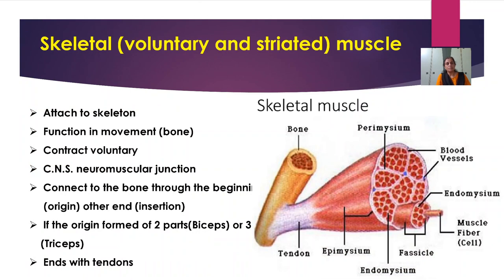Skeletal muscles are voluntary in function and show striations. The diagram shows a bone with the attachment of skeletal muscle with the help of tendons. The bone is attached to the skeletal muscle, and the middle portion attaching bone and skeletal muscle is called tendons. Skeletal muscles are attached to the skeleton and show the function of movement of bones.